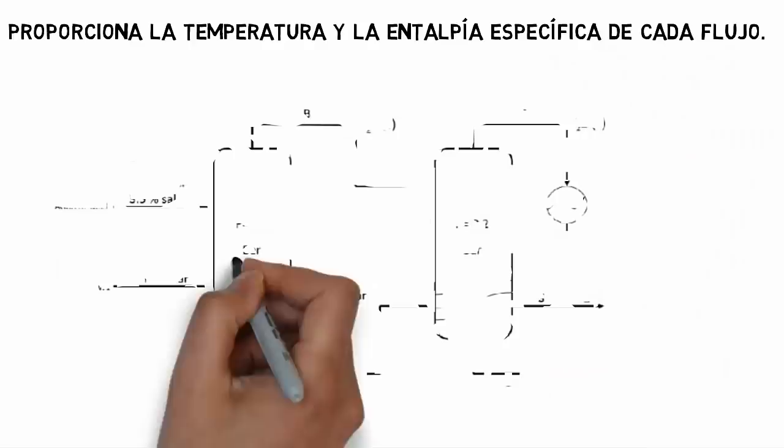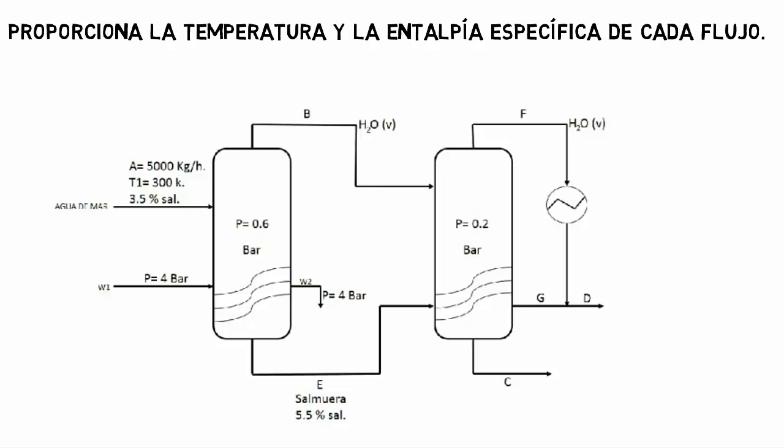A double-effect evaporator is used to produce fresh water from seawater containing 3.5% salt. The seawater enters the first evaporator at 300 Kelvin at a flow rate of 5000 kg/h, and saturated steam at a pressure of 4 bar feeds a set of tubes in the first evaporator.